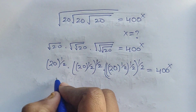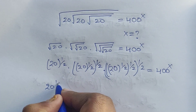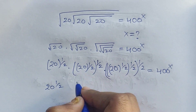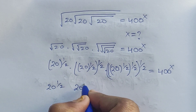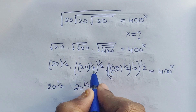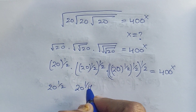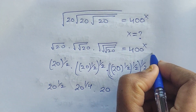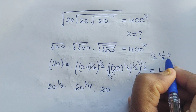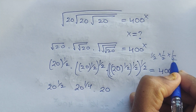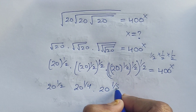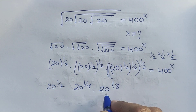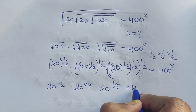Now, 20 to the power of 1/2, and 20 to the power of 1/2 times 1/2 which equals 20 to the power of 1/4. For the third term: 1/2 times 1/2 times 1/2 — that is 2 times 2 = 4, times 2 = 8 — so it equals 1/8. Therefore we get 20 to the power of 1/8, equal to 400 to the power of x.